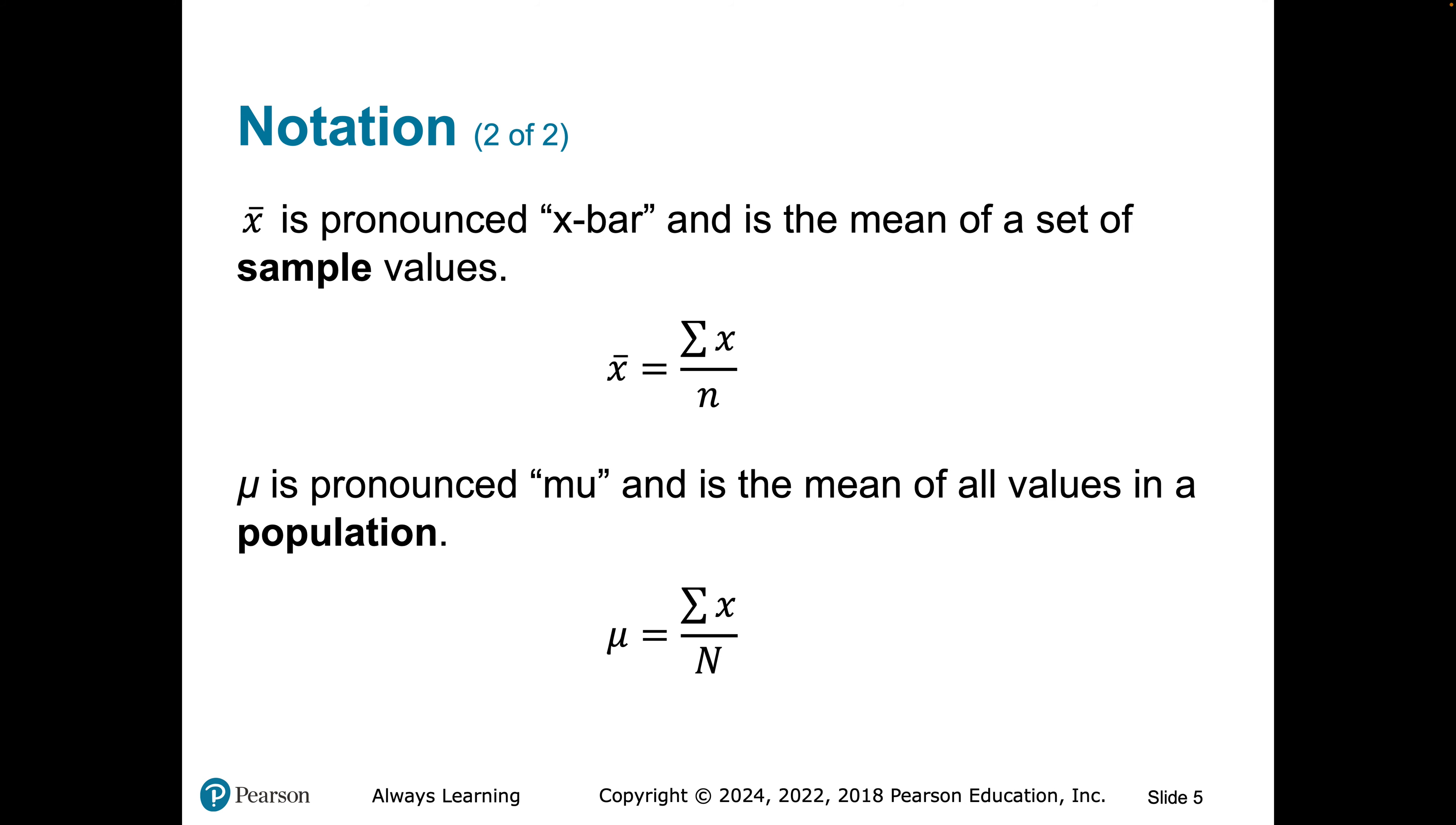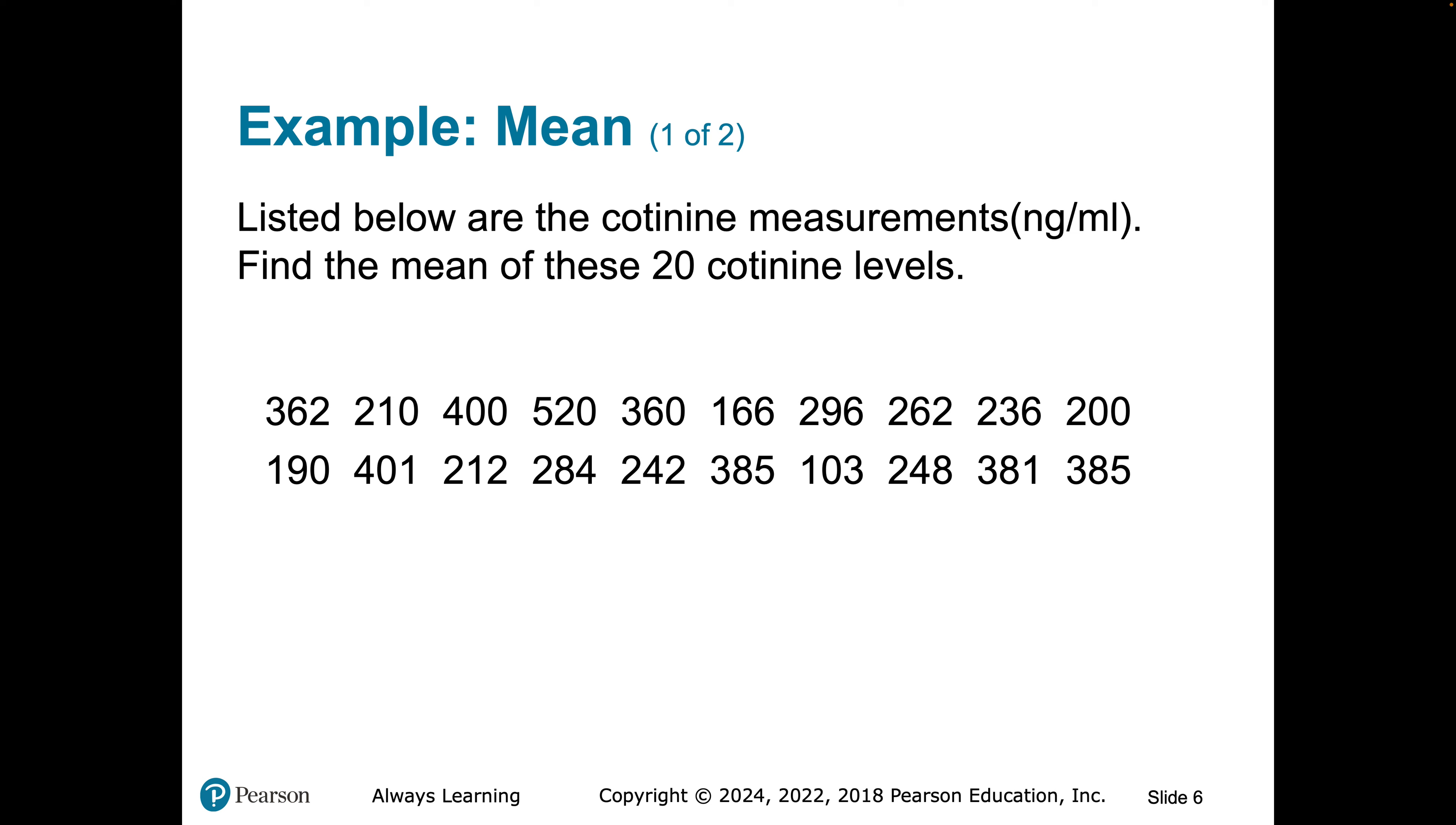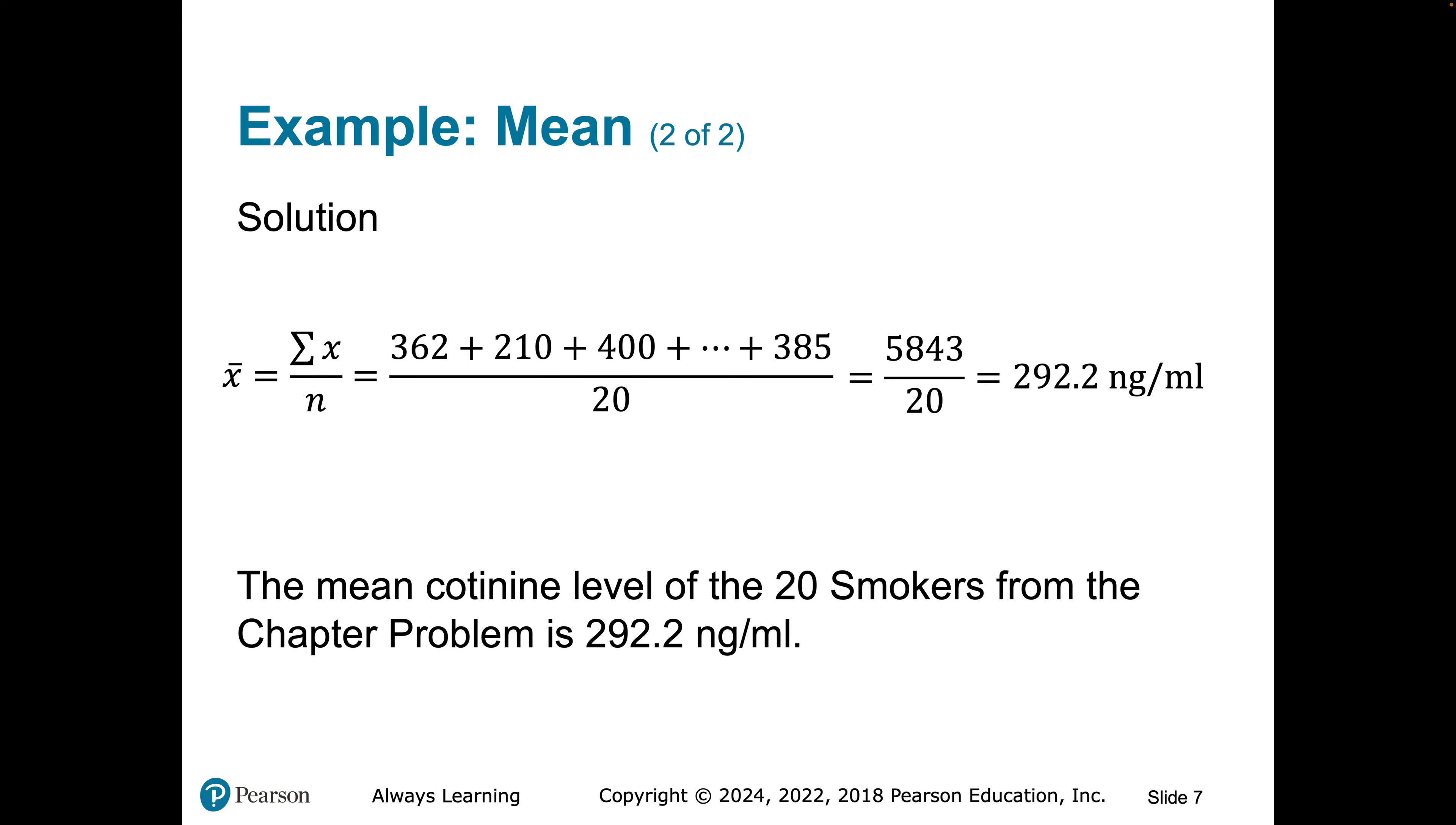Really easy to find. If we have a mean from a sample, we call it x-bar. If we have a mean from a population, we call it mu. They're found the same way. We sum up the data. So when you see x-bar equal, that Greek letter sigma just means summation in mathematics. x is our vector. Sorry, don't want to get that fancy here. It's just our numbers. And then n is the total number of numbers that we have. So if I have 20 measurements, 362, 210, and so on and so forth, I want to find the mean. I'm just going to add up all the numbers. I'm going to divide by 20 and I get a mean for the 20 smokers for 292.2.